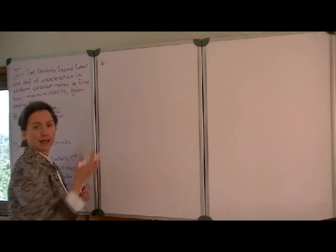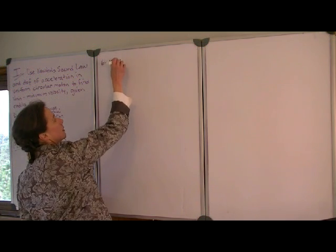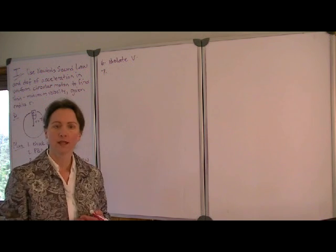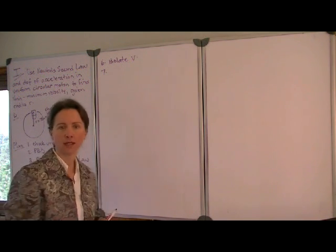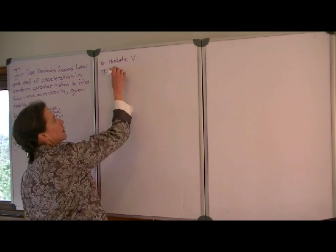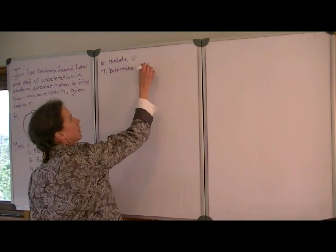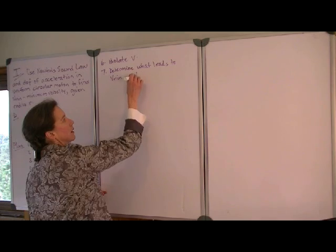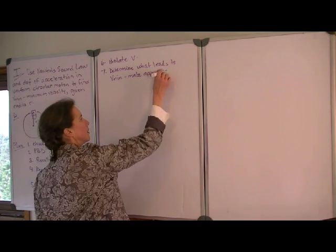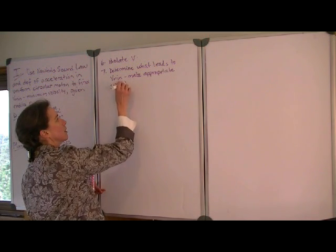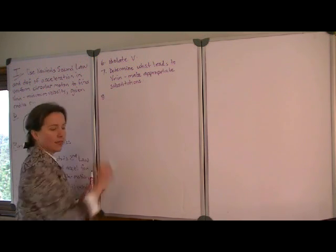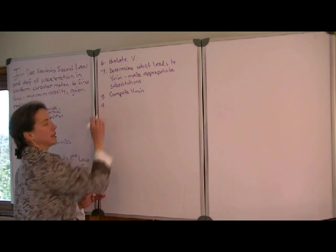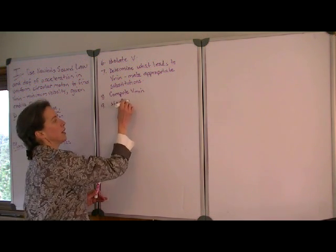Once we've done that, we want to isolate the value we've been asked to find. Then we will end up with a general expression for the velocity as a function of the other quantities. We're not asked about any velocity, though. We're asked about the minimum velocity. So we need to determine what leads to the min and make appropriate substitutions. Then we will be ready to compute the minimum velocity. And before we decide we're done, we want to make sure we report our answer to the correct number of significant figures.